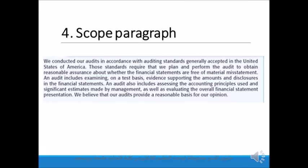The second paragraph in the standard unqualified audit report is the scope paragraph. Reading from the report: 'We conducted our audit in accordance with auditing standards generally accepted in the United States of America. Those standards require that we plan and perform the audit to obtain reasonable assurance about whether the financial statements are free of material misstatements. An audit includes examining on a test basis evidence supporting the amounts and disclosures in the financial statements, assessing the accounting principles used and significant estimates made by management, as well as evaluating the overall financial statements presentation. We believe that our audit provides a reasonable basis for our opinion.'